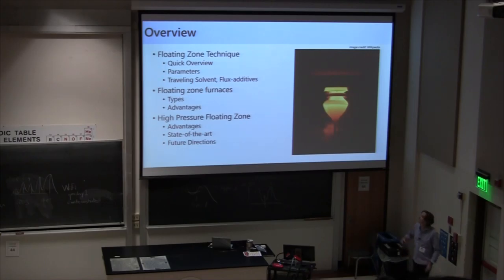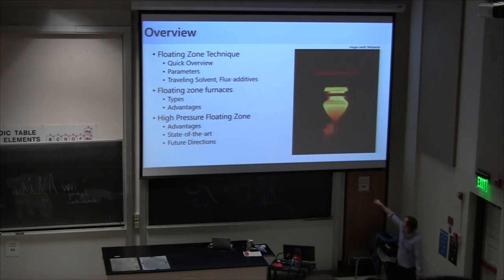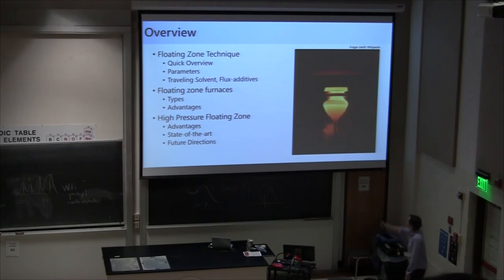So just an overview of what I'd like to present today. Since this is really the first talk dedicated to floating zone, I'll give you a quick overview of the technique itself — what it is, the relevant parameters, and some of the different variants. For instance, can you deal not only with congruently melting materials, but also incongruently melting materials, as some of the earlier talks mentioned with flux growth techniques? You can incorporate some of these techniques into the floating zone method as well.